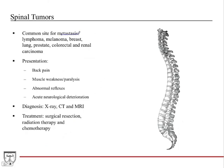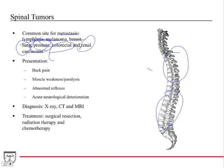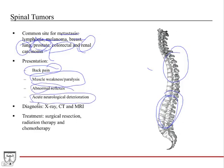Spinal tumors — the spine is a common site of metastasis, especially from lymphomas, melanomas, breast cancer, lung cancer, and prostate cancer. Lung cancer often metastasizes to the thoracic spine; colorectal and renal cell carcinoma tend toward the lumbar spine. Presentation ranges from asymptomatic to significant back pain, muscle weakness, and paralysis depending on the level of neurological compression. Abnormal reflexes and acute neurological deterioration can also occur. Diagnosis uses x-ray, CT, and MRI to evaluate neurological structures.